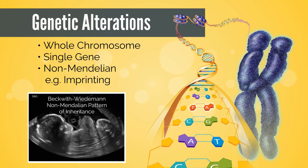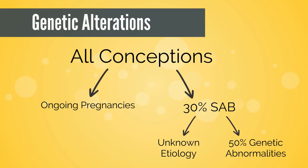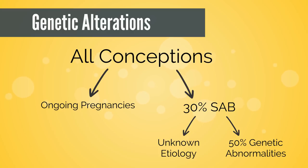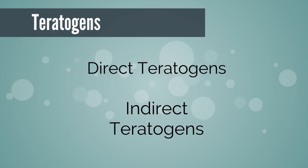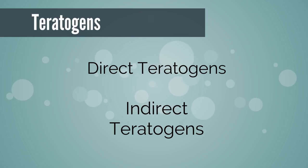It is thought that 50 percent of all conceptions end in spontaneous abortion during the first trimester, and half of these may be due to a chromosomal abnormality. Without this natural screening process, the incidence of birth defects could be as high as 12 percent. The next category affecting embryogenesis is teratogens, which may be directly teratogenic on the developing embryo or indirectly teratogenic — caused by a maternal condition that affects embryonic development.